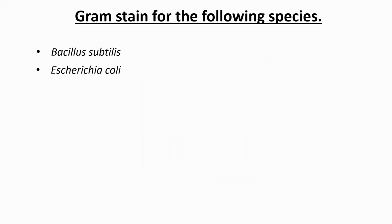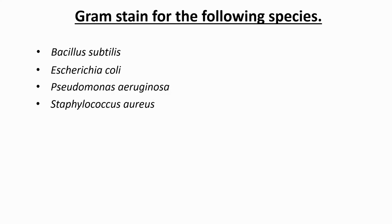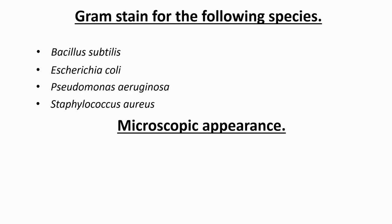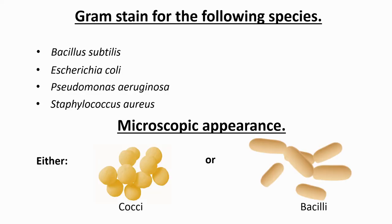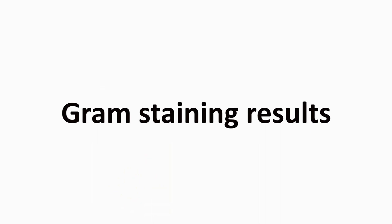Here are some examples of gram stains for the following species. In addition to observing gram staining for each species, the cell shape can also be seen using oil immersion at 100x objective magnification. For these species, cells will either be cocci or bacilli. Three options are given, followed by the correct answer.